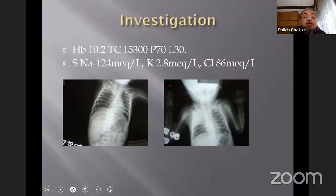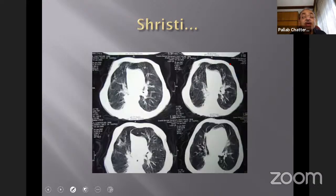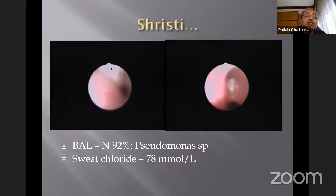Multiple X-rays showing repeated infections. CT scan revealed bilateral diffuse opacities. Bronchial lavage showed thick mucus secretions with 92% neutrophils and Pseudomonas grew. The diagnosis is written all over — this child has cystic fibrosis. Sweat chloride was 78. The criteria for cystic fibrosis diagnosis: one or more phenotypic features, or history of CF in a sibling, or a positive newborn screening test, PLUS increased sweat chloride on two occasions, or identification of two CF mutations, or abnormal nasal epithelial ion transport.